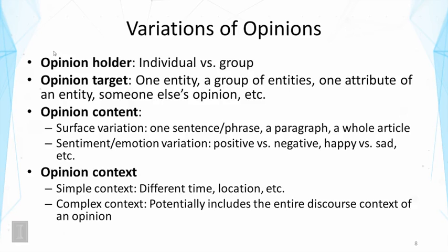Opinion content can also vary a lot. On the surface, you can identify a one-sentence or one-phrase opinion, but you can also have longer text expressing opinion, like a whole article. Furthermore, we can identify variation in the sentiment or emotion dimension — that's about the feeling of the opinion holder. We can distinguish positive versus negative or neutral, or happy versus sad. The opinion context can also vary: a simple context like time or location, or a complex one such as a background topic being discussed. When an opinion is expressed in a particular discourse context, it must be interpreted differently than in another context.